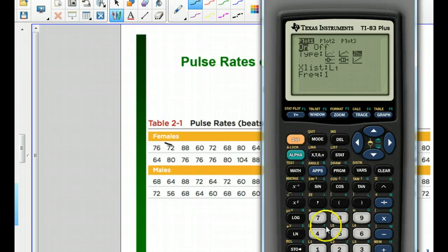There's L1, L2, L3, L4, L5, L6. But most of the time you just use list one and clear it out and use it again. So it's in there.